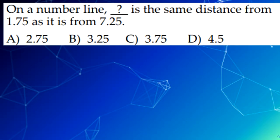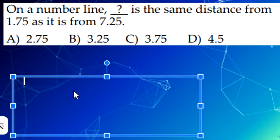The next question is, on a number line, blank is the same distance from 1.75 as it is from 7.25. So what we have to do is find the average of 1.75 and 7.25. We add them both up and divide by 2, and we would get D, 4.5.